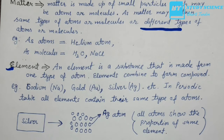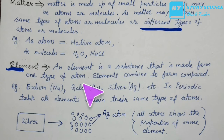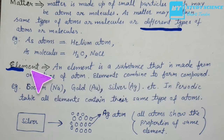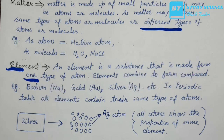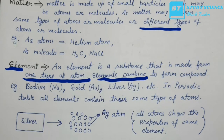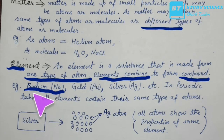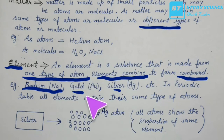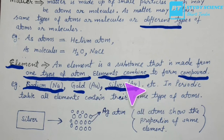An element is a substance made from one type of atom. Elements combine to form compounds. For example, sodium, gold, and silver — if we take any of these, we will have only one type of atom present. The smallest unit of matter and element is an atom.